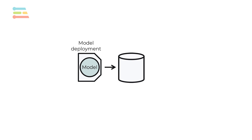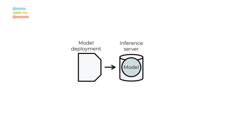Once you are happy with the model performance, or your AutoML tools determine that the model works well enough according to your metrics, it's time to deploy. In cloud-based AI setups, your model is moved to an inference server that can be accessed through a web API.